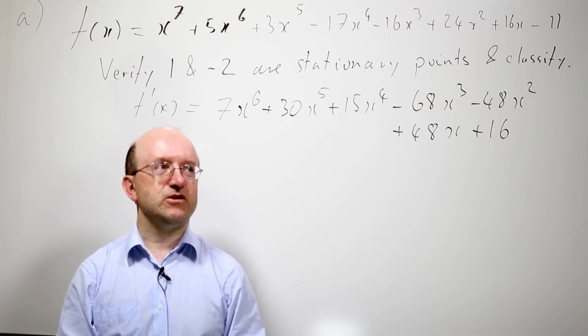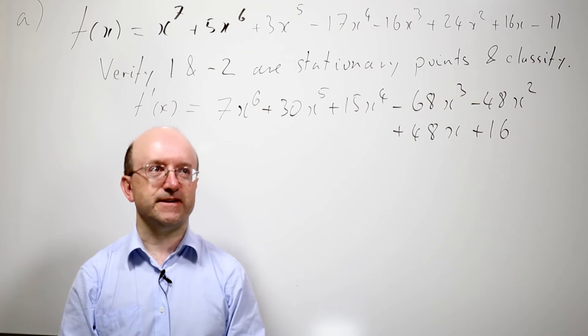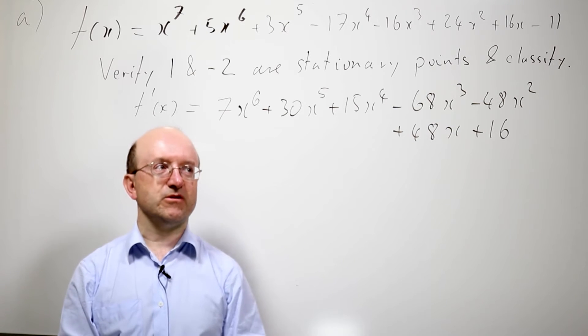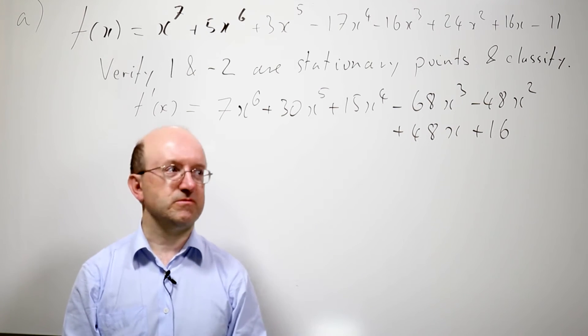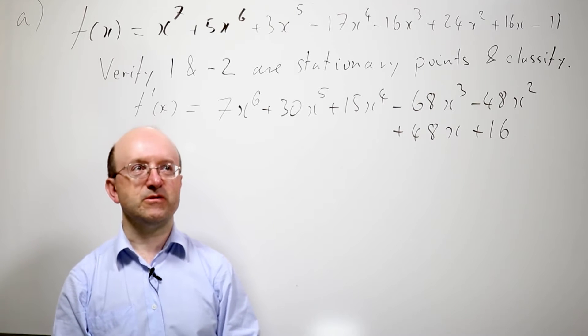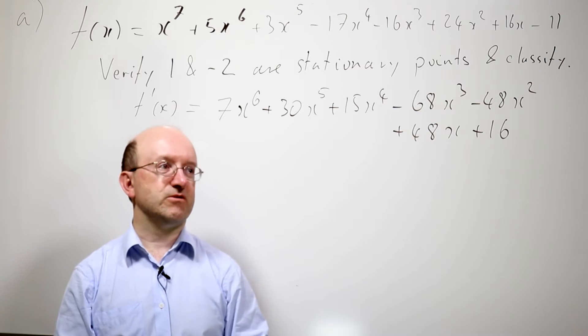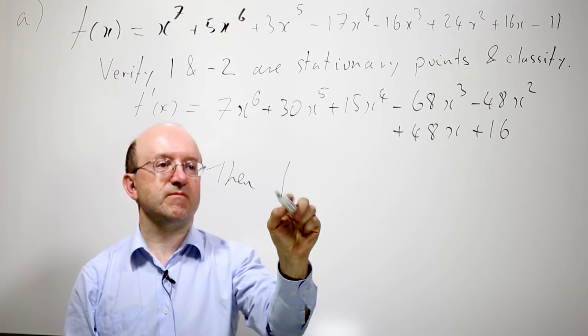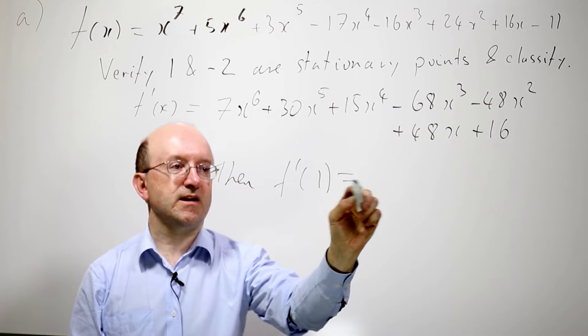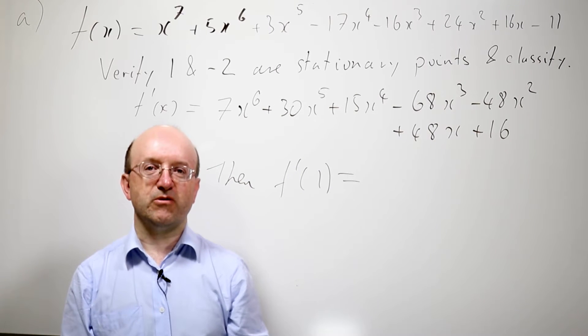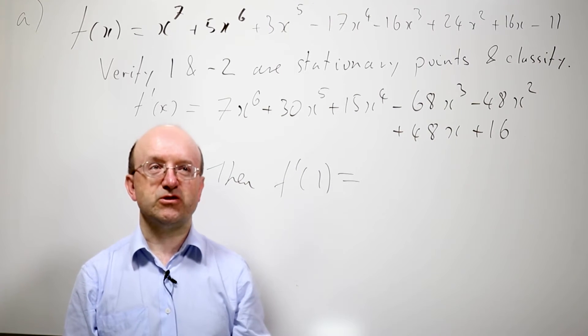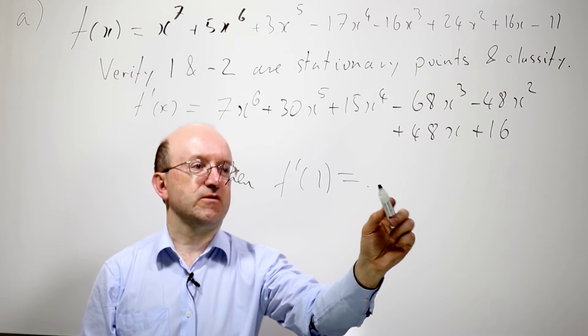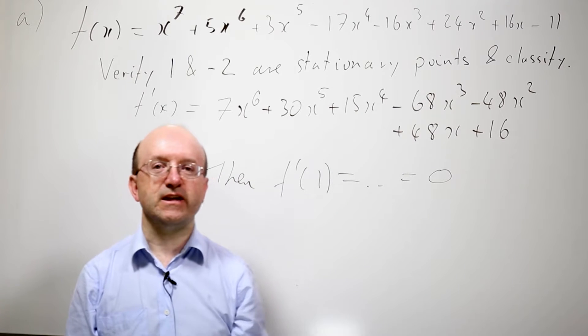The question asks us to verify that these two points are stationary points and classify them. So the first thing we need to do is evaluate the derivative at these points. Well, I've written the derivative down, so save us having to go through that calculation. So we want to actually evaluate the derivative. Well, given this for the derivative, evaluating the polynomial at 1 is easy, just sum the coefficients, and if you sum the coefficients in this one, you quite easily get 0.